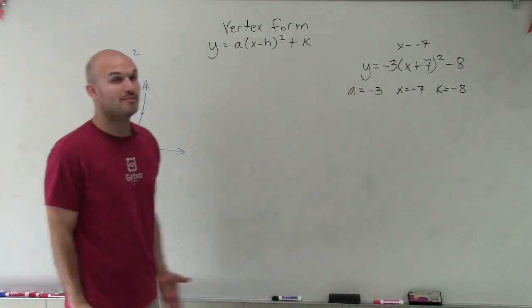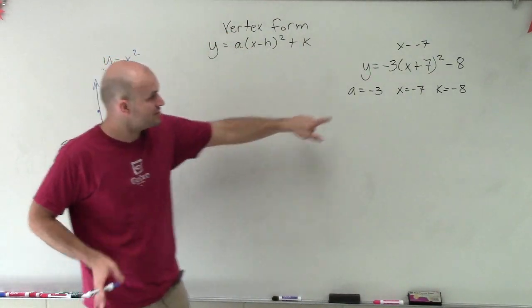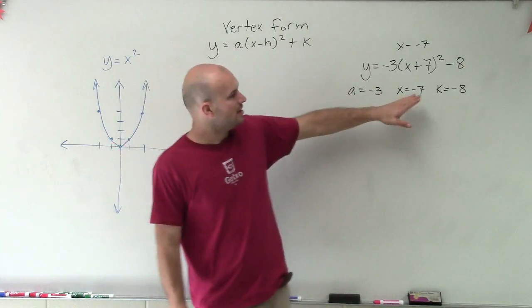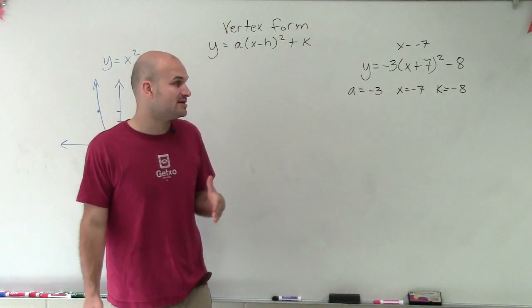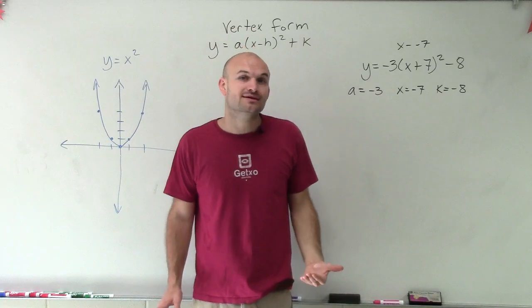Now remember, let's go back through our transformations. a is going to tell us if it's going to be dilated and also reflection. So since a is negative, we know we're going to reflect over the x-axis. h equals negative 7. That means I'm going to shift my graph seven units to the left. And k equals negative 8. That means I'm going to shift my graph down eight units.